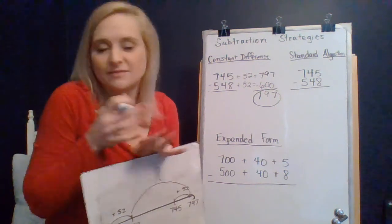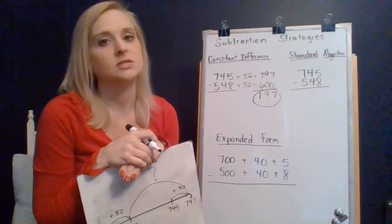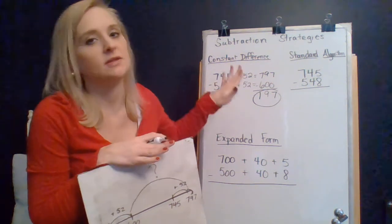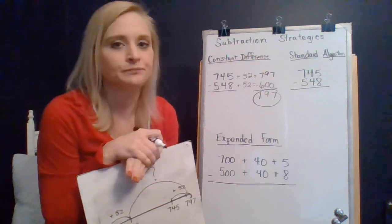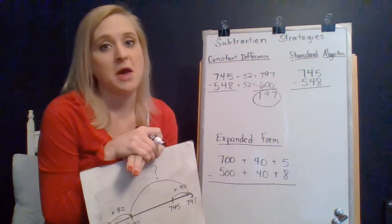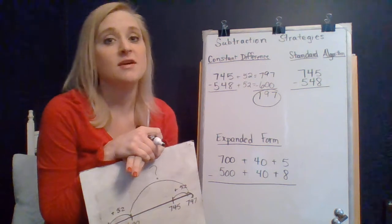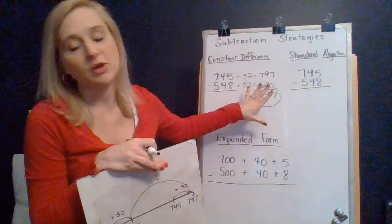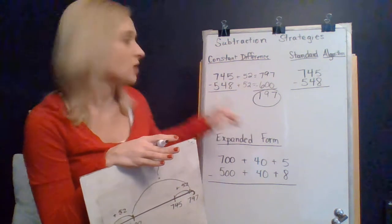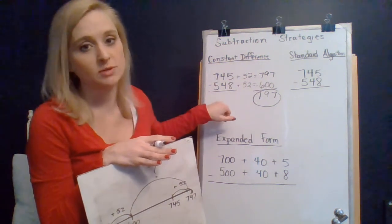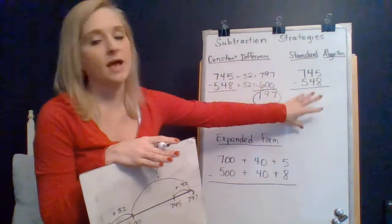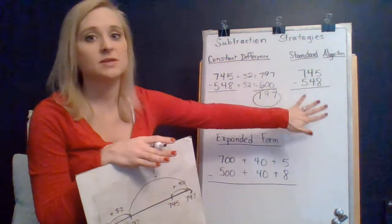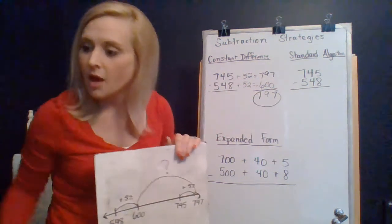And why does the constant difference strategy help in situations? What was the big reasoning for even considering this? Hopefully you're remembering about regrouping in subtraction. Sometimes it requires a lot of regrouping. And so this took out the regrouping that we would have to do if we were subtracting this original set of numbers. So that leads me on to the standard algorithm. And we're going to compare the algorithm to the constant difference strategy so that you can see that this problem requires regrouping.